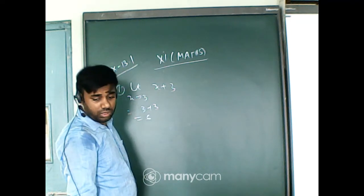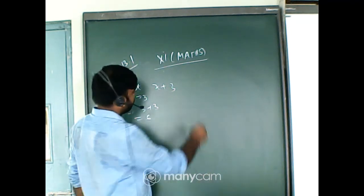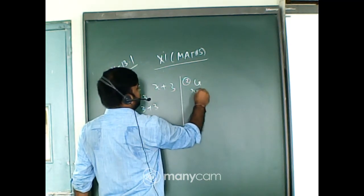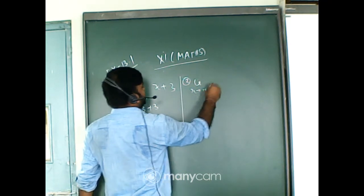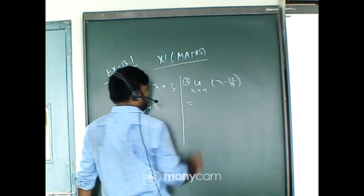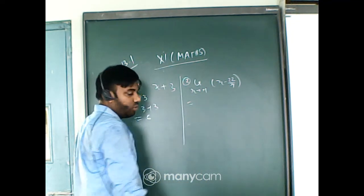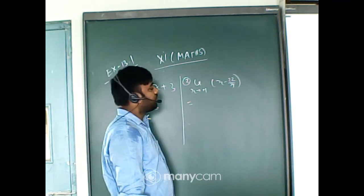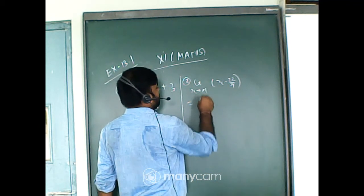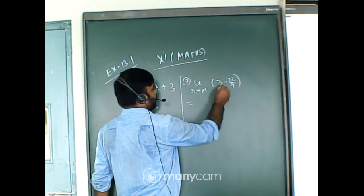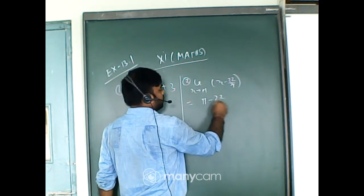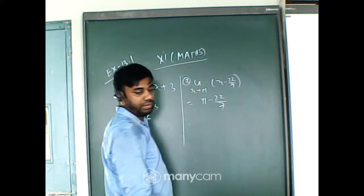Question number two: limit x tends to pi of (x minus 22/7). Here also I will use the direct substitution method. Put the value of x directly — in place of x put pi — and that gives the limit value.